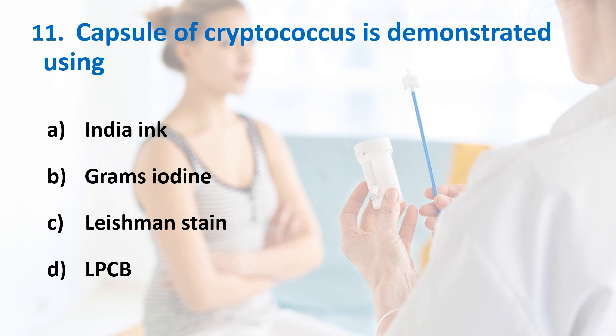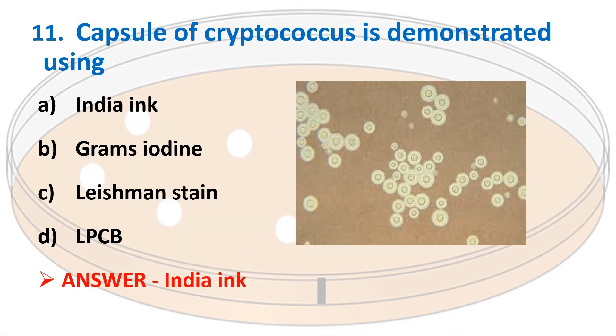Eleventh question: The capsule of Cryptococcus is demonstrated by using? Options: India ink, Gram stain, Leishman's stain, LPCB. Answer is India ink. India ink is a negative stain. See the picture.